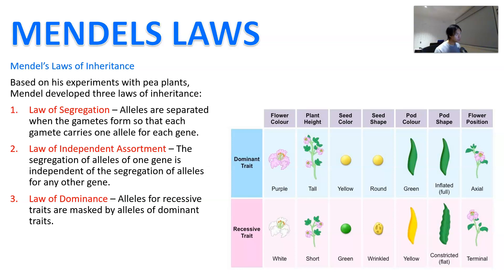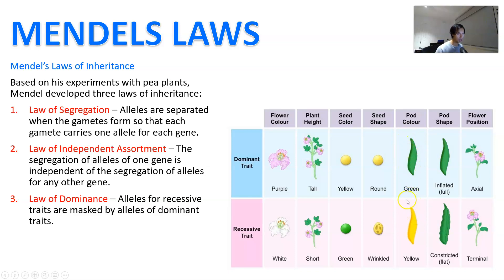The third one is the law of dominance. Alleles for recessive traits are going to be masked by alleles for dominant traits, and here you can see this table with all the dominant traits at the top and all the recessive ones at the bottom. For example, flower color — dominant is purple — whereas pod color — dominant is going to be green versus yellow.